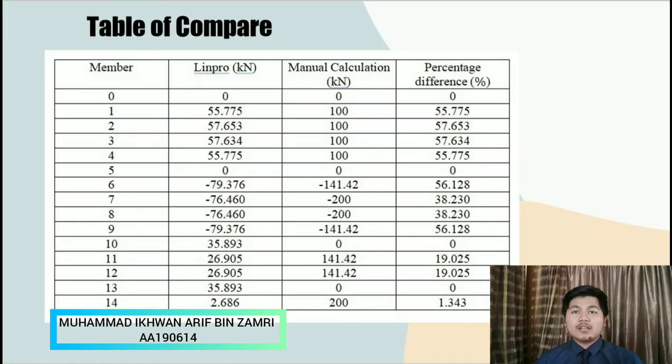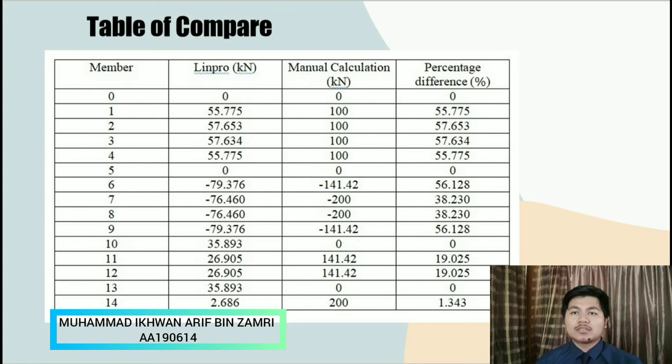Next we do a comparison between manual calculation and LINPRO software calculation. We divide it into four columns. The first column is member, second column is LINPRO calculation, third column is manual calculation, and the last one is percentage different. So this is the result we get.